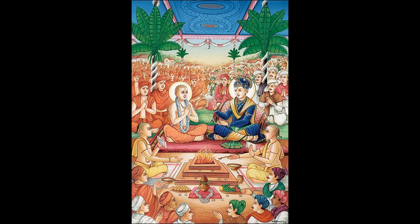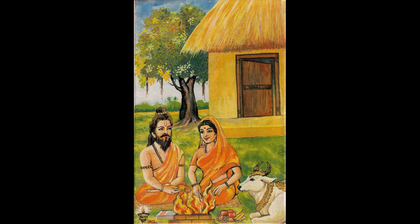As fate would have it, Nimi forgot to inform Sage Vashishta about the time of the yagna. By the time Vashishta arrived, the preparations were almost at an end without any input from him. Vashishta was very upset and admonished Nimi: 'You are an irresponsible king. To perform a yagna, sincerity and proper preparation must be done, and the person performing it must be ready — that takes time. How could you forget to inform me of the time?' Nimi accepted his fault.